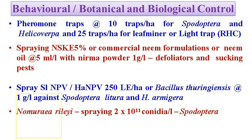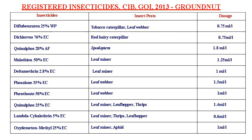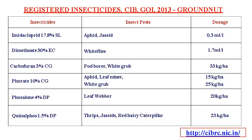Chemical control: for leaf miner, leaf folder, or hairy caterpillar, the crop is effectively managed by quinalphos and chlorpyrifos; dusting of quinalphos can be done in the field. For the sucking pest complex, thrips can be controlled with seed treatment with imidacloprid; spray of imidacloprid or acephate is also recommended. Seed treatment with chlorpyrifos at 6 ml per kg of seed can be effectively used. Soil treatment with phorate granules at 15 kg per hectare is effective against white grub. Government of India recommended insecticides include: dichlorvos, chlorpyrifos, phorate, malathion, deltamethrin, phoxim, cypermethrin, fenvalerate, lambda-cyhalothrin, and acetamiprid. Other recommended chemicals include imidacloprid for sucking pests, carbofuran, thiamethoxam, and dimethoate in various dosages.